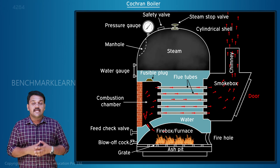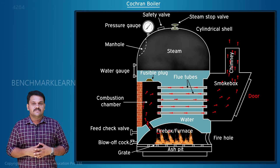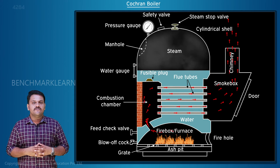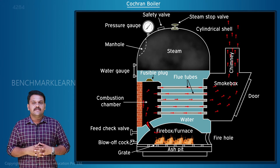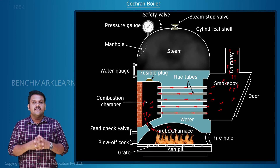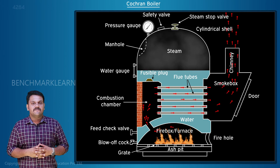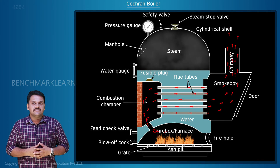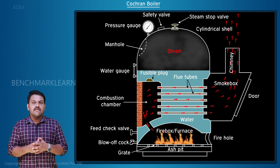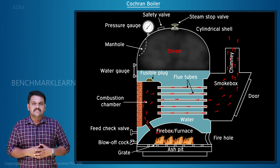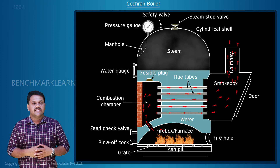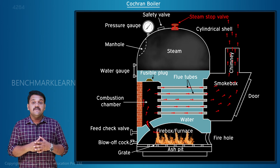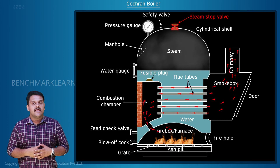The smoke box is provided with a door for the purpose of cleaning the smoke box and fire tubes. The hot gases, while passing through the fire tubes, transfer heat to the water, which is already heated by the furnace. The water converts into steam and accumulates in the steam space at the top of the shell. Using the steam stop valve, steam is taken out as required.